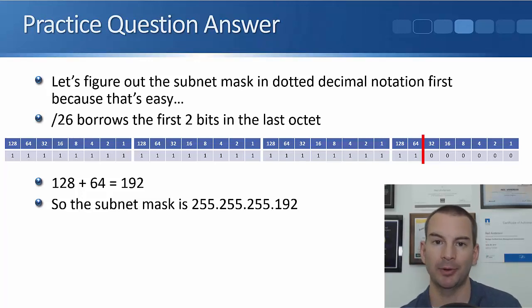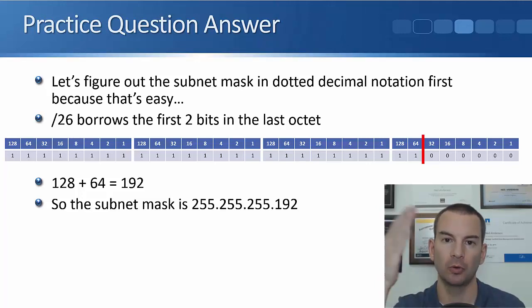So take a piece of paper, start off at the top, start off at the right, and write 1, 2, 4, 8, 16, 32, 64, 128. And then you can put a dot in, and then 1, 2, 4, 8, and so on, until you've drawn out the bit pattern for the four octets in your subnet mask.